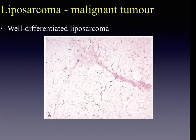Liposarcoma is one of the common sarcomas of adulthood, occurring mainly in people in their 50s and 60s. The main sites are deep soft tissues of proximal extremities and retroperitoneum. Liposarcomas are divided into three main types: well-differentiated liposarcoma, myxoid liposarcoma, and pleomorphic liposarcoma.